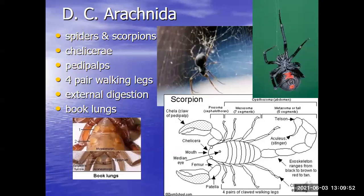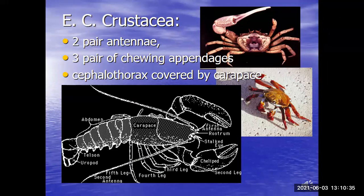The last three arthropod classes — insects, centipedes, and millipedes — are grouped in subphylum Uniramia. Sometimes the seven-level classification system doesn't work perfectly, so we add subphyla, suprafamilies, supraorders, and subspecies. Subphylum Uniramia is divided into three classes: centipedes, millipedes, and insects.